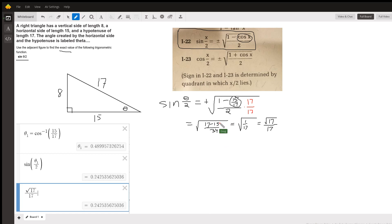So I get square root of 2/34 or 1/17. And if I rationalize the denominator, I get the square root of 17 over 17. That's your exact value.